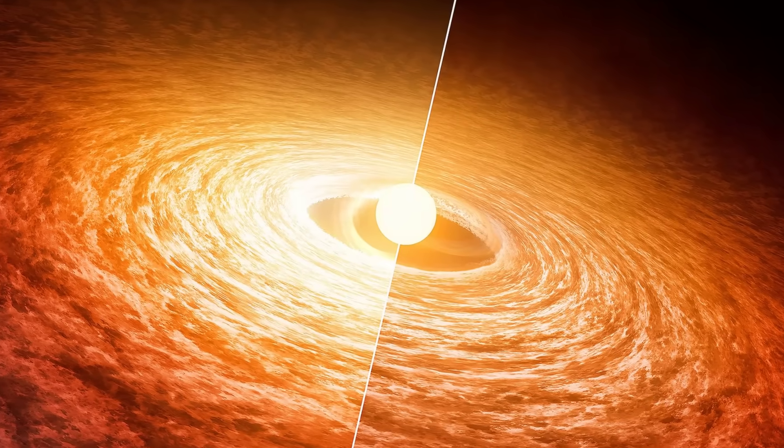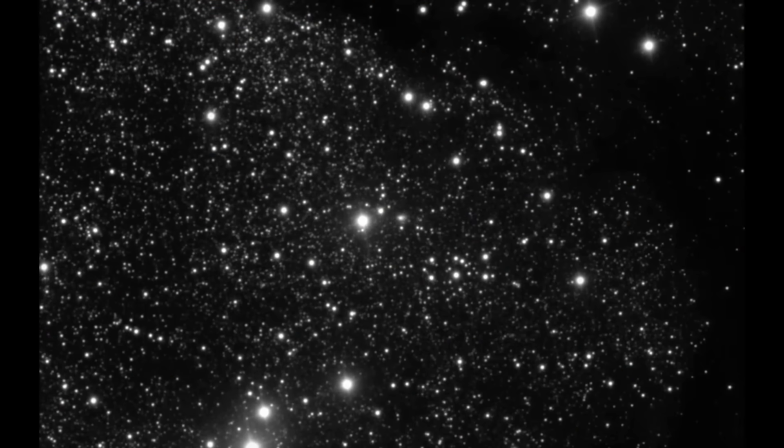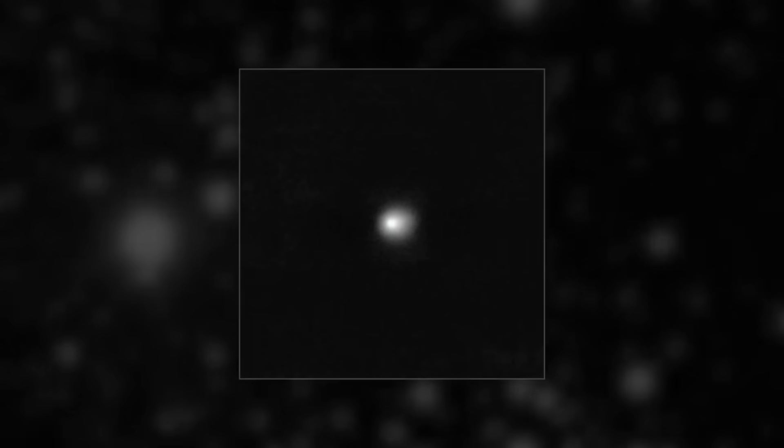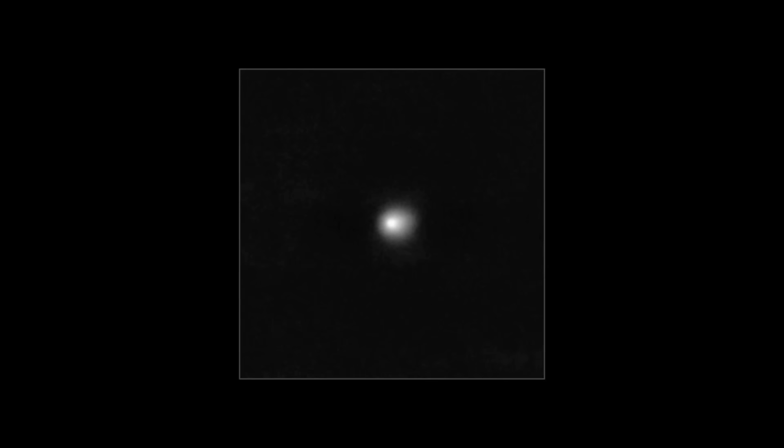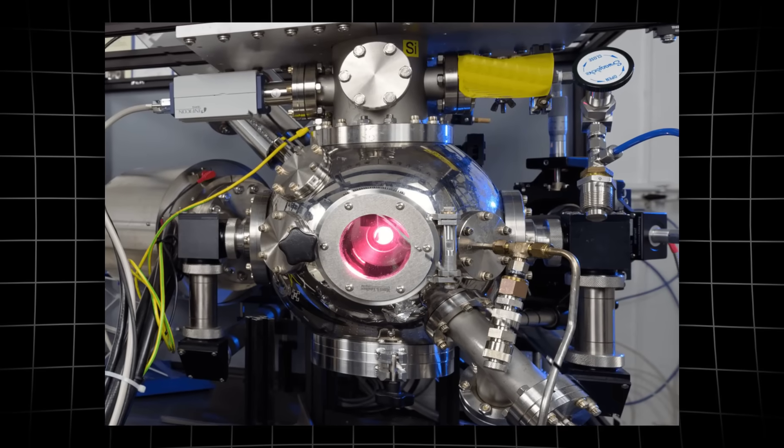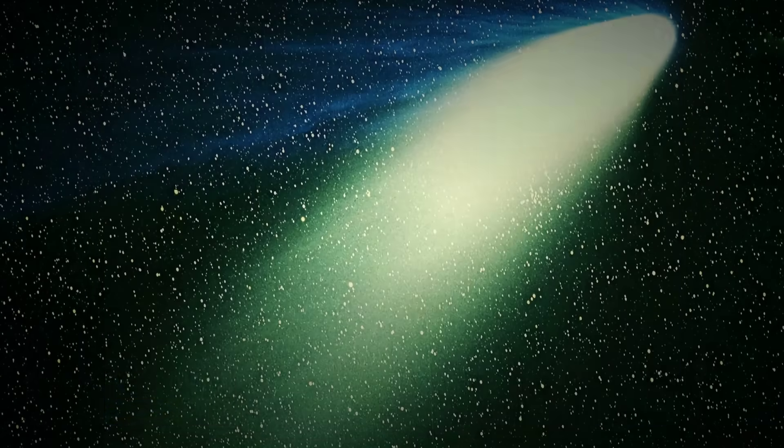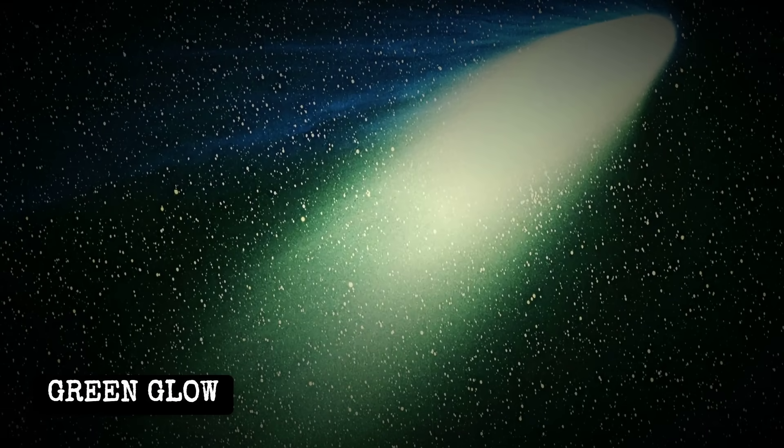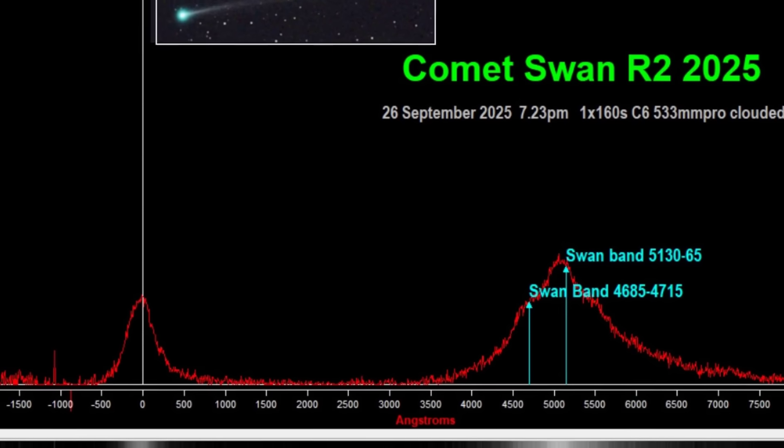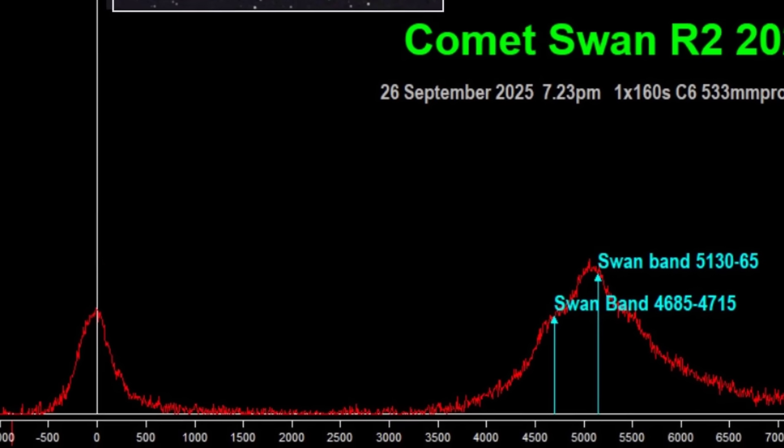What's really interesting is this color change we observed. Initial observations showed a reddish hue, which is common for objects from interstellar space due to radiation processing of organic compounds over millions of years. But then, as it became more active, it developed this distinctive green glow. That green color comes from diatomic carbon molecules, C2, being excited by solar ultraviolet radiation.